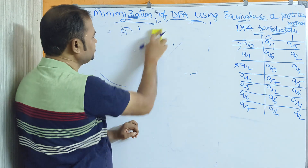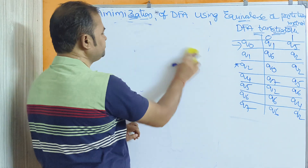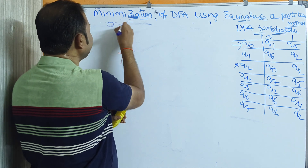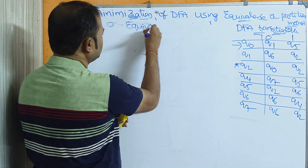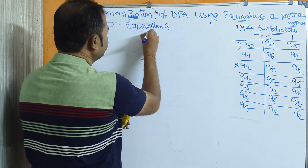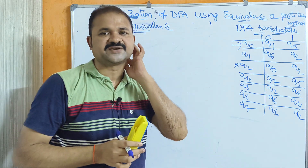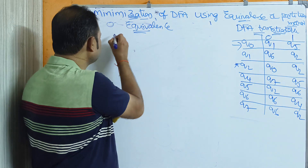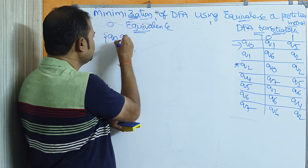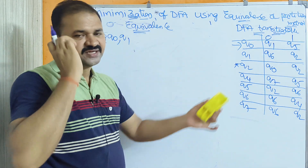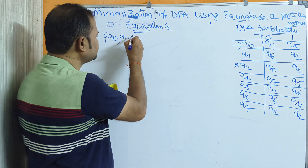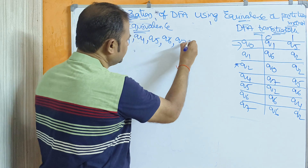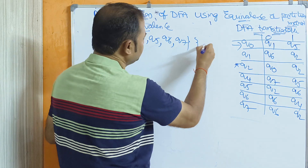Now we have to construct the zero-equivalence. Zero-equivalence mainly contains two sets of states: the first set represents non-final states, the second set represents final states. Here Q2 is the final state; all remaining states are non-final. So non-final states are Q0, Q1, Q4, Q5, Q6, Q7, and the final state set is Q2.